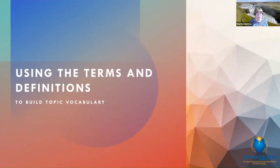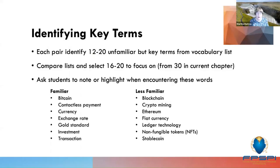We'll talk first about using the terms and definitions to build topic vocabulary. One activity is to identify key terms — have each pair of students identify 12 to 20 unfamiliar but key terms from the vocabulary list, then compare lists and select 16 to 20 to focus on. There are 30 terms in the current currency chapter. Ask students to note or highlight when they encounter these words as you work on developing their understanding. I like to go through and determine which words my students would be pretty familiar with already.